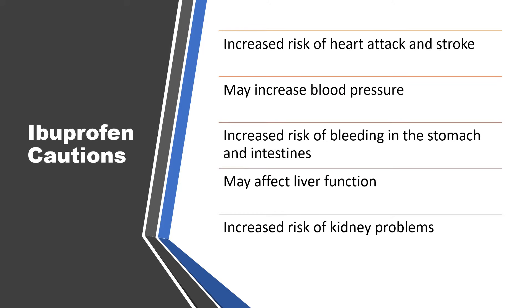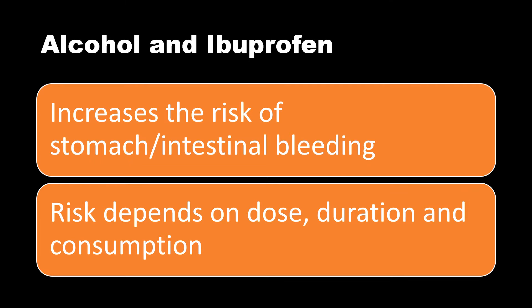Less common side effects can include increased blood pressure, heart changes, hair loss, ulcers, hearing loss, and reduced kidney function. Certain people should avoid ibuprofen and NSAIDs in general, as it can increase the risk of heart attack and stroke depending on your underlying risk. It can also increase blood pressure — so monitor it while on ibuprofen — and it can increase the risk of GI bleeding, affect liver function, and increase the risk of kidney problems. Alcohol and ibuprofen together can increase the risk of bleeding in the stomach or intestines, so it is best to avoid them together.